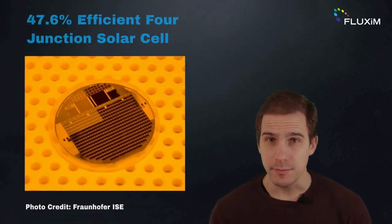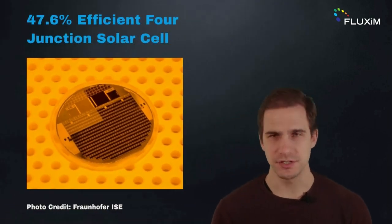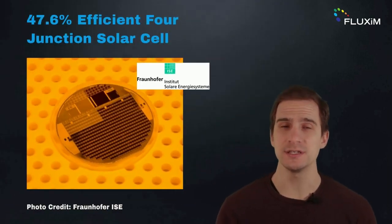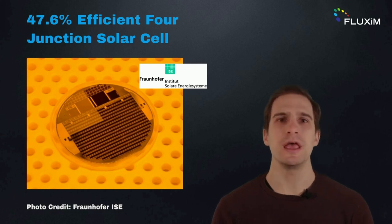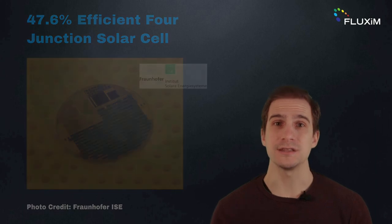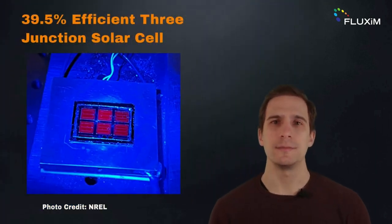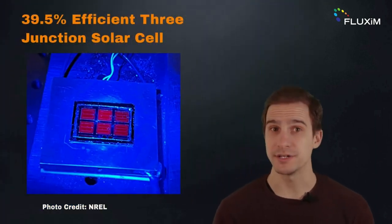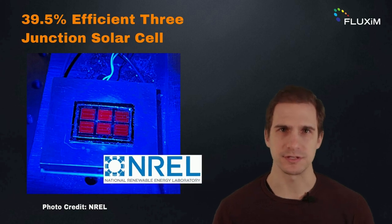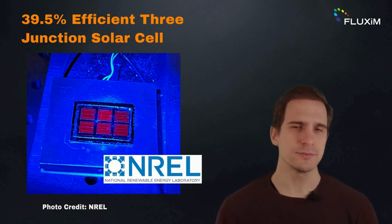Solar cells with infinite multi-junctions have a theoretical efficiency of up to 86.8%. Currently, the most efficient solar cell in the world has an efficiency of 47.6% under concentrated illumination, and it is made up of four junctions. The record efficiency under standard global spectrum instead amounts to 39.5% for a triple junction solar cell.